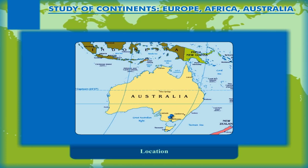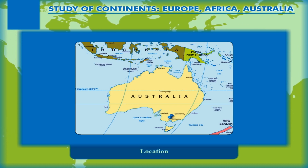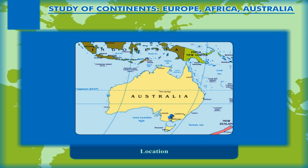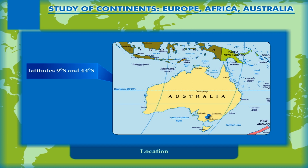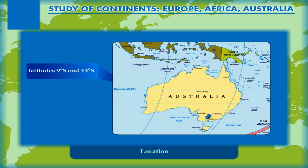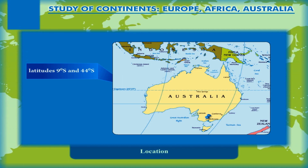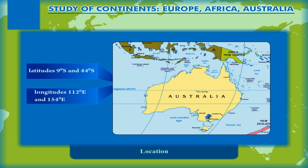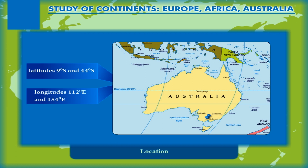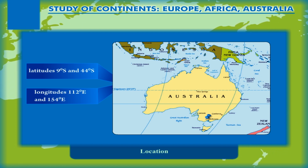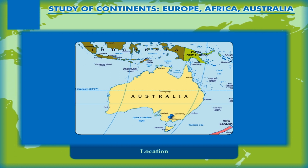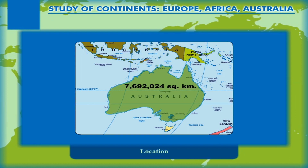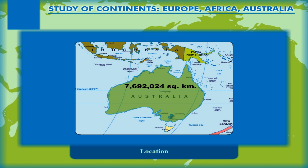The smallest continent, Australia, lies completely in the southern and eastern hemispheres. Lying between the latitudes 9 degrees south and 44 degrees south, and longitudes 112 degrees east and 154 degrees east, Australia is the sixth largest country in the world. It has an area of about 7,692,024 square kilometres.